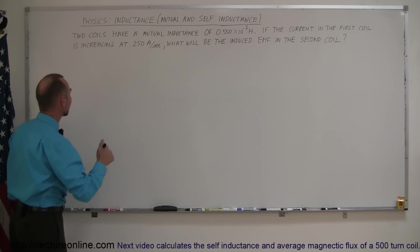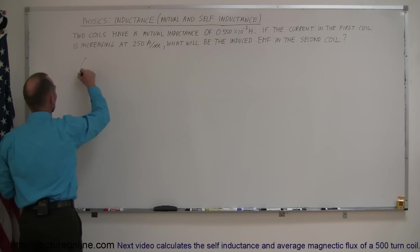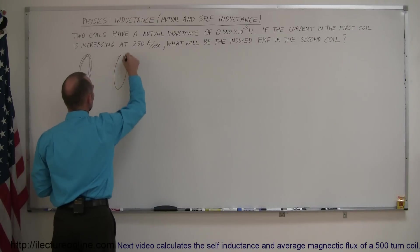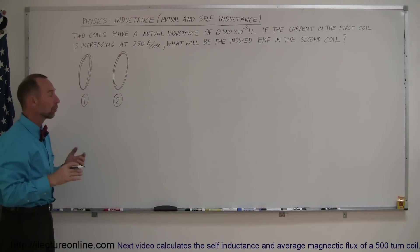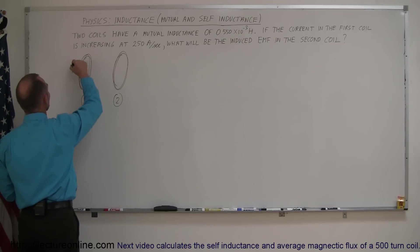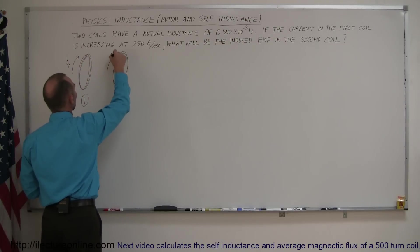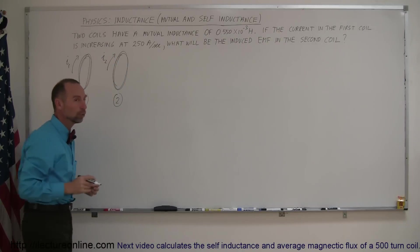So, to understand this a little bit better, let's draw a couple of coils. So, here's coil number 1, and here's coil number 2. And if current flows through each coil, so let's say we have a current flowing through coil 1, which is I1. We have a current in the second coil, let's call it I2.